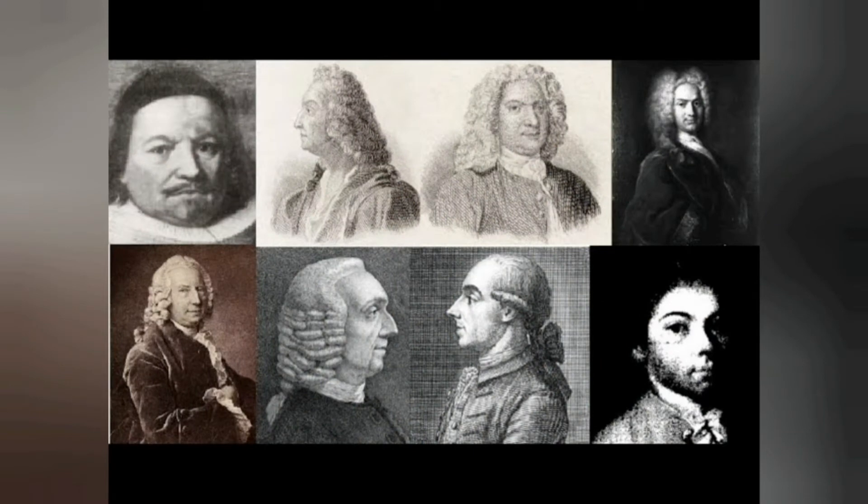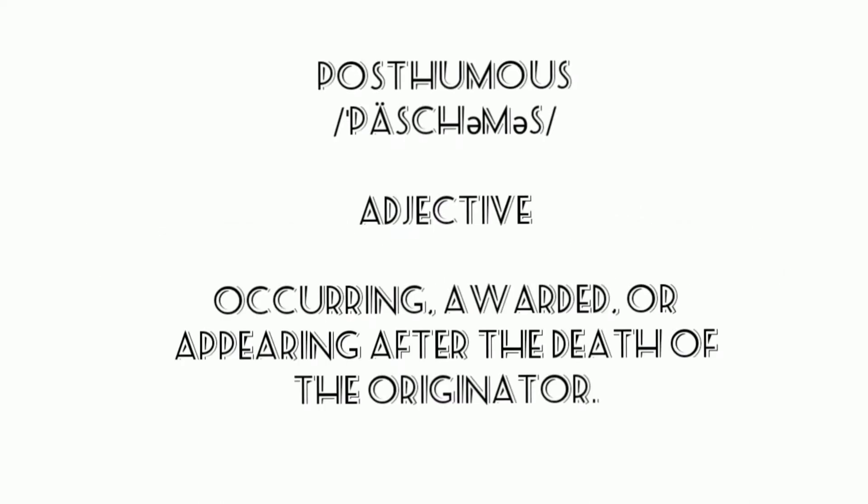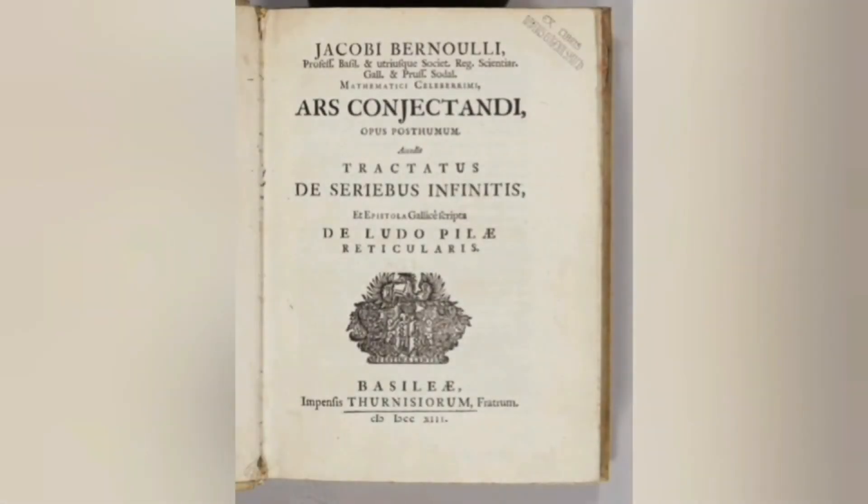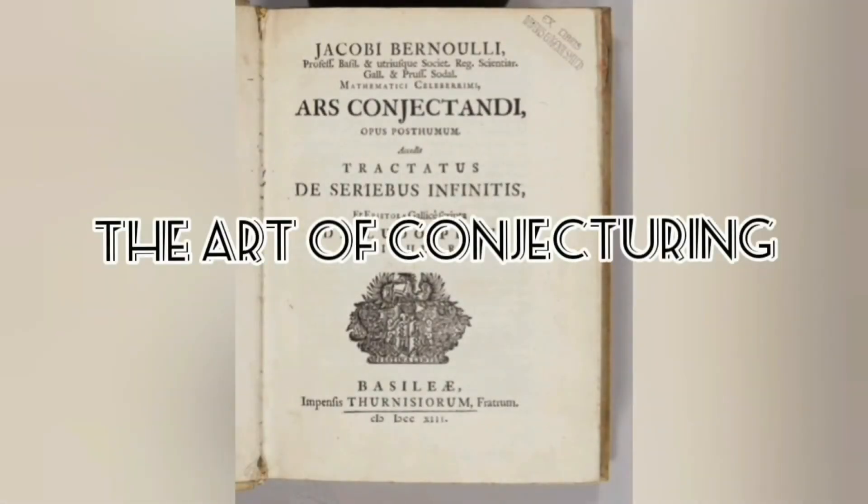The where and when of the binomial distribution is Bernoulli's posthumous, meaning after death, work titled Ars Conjectandi or The Art of Conjecturing. It was published in 1713, or eight years after he had passed.